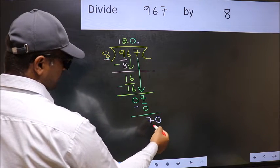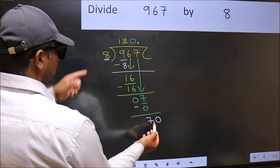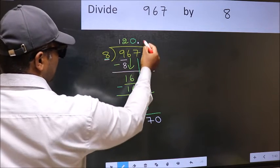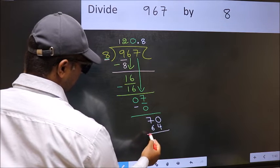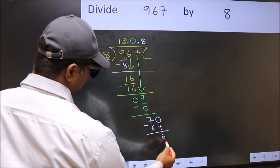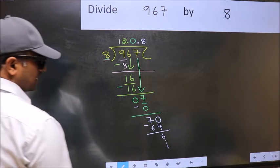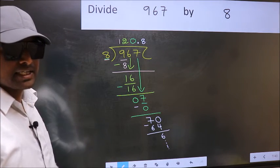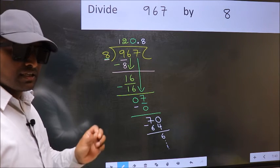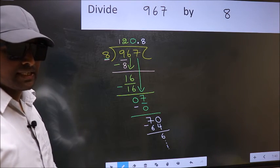So 70. A number close to 70 in 8 table is 8 8s, 64. Now you should subtract. You get 6 and continue the division. I am not doing that. Did you understand where the mistake happens? You should not do that mistake.